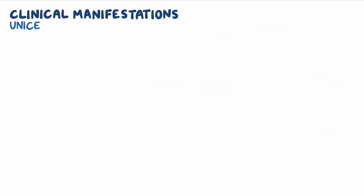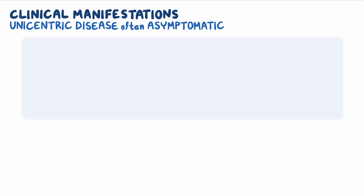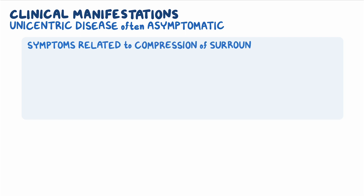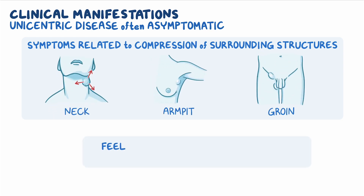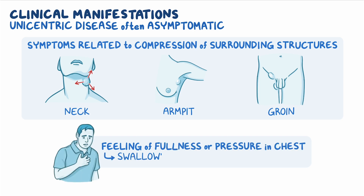Individuals with unicentric Castleman disease are often asymptomatic. If they experience symptoms, they are usually mild and related to the compression of surrounding structures by enlarging lymph nodes. Common symptoms include feeling a lump under the skin in the neck, armpit, or groin area, and a feeling of fullness or pressure in the chest that can make swallowing or breathing more difficult.